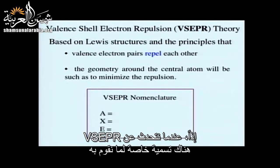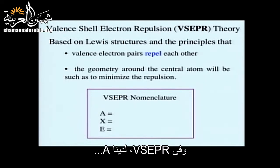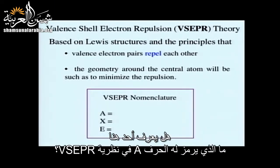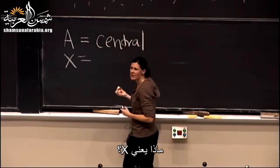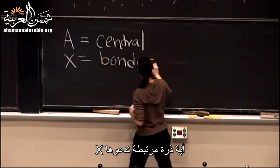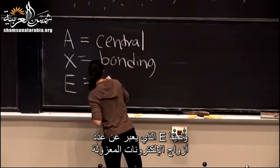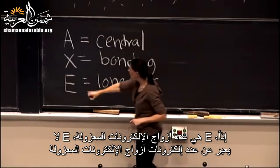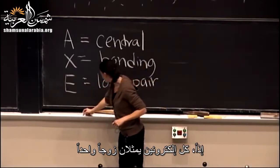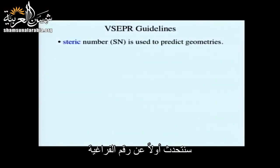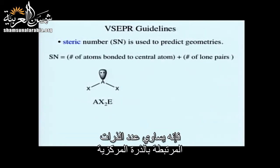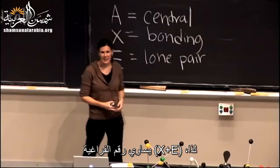In VSEPR, A is the central atom, X is any bonding atom, and E represents lone pairs — not lone pair electrons, so two electrons equals one lone pair. The steric number is simply the number of bonded atoms plus the number of lone pairs — X plus E. In VSEPR, we treat bonds as bonds regardless of whether they're single, double, or triple. What matters is the number of atoms bonded to the central atom.